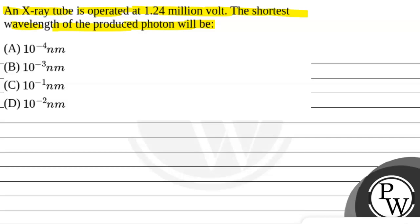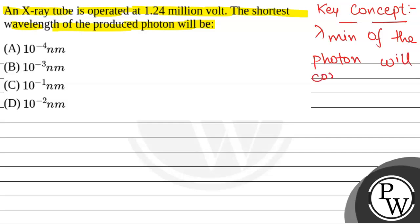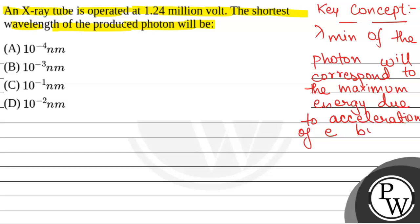First of all, we will see what will be the key concept to solve this question. The minimum wavelength, lambda min, this is the minimum wavelength of the photon, will correspond to the maximum energy due to acceleration of electron by V volts in the tube.